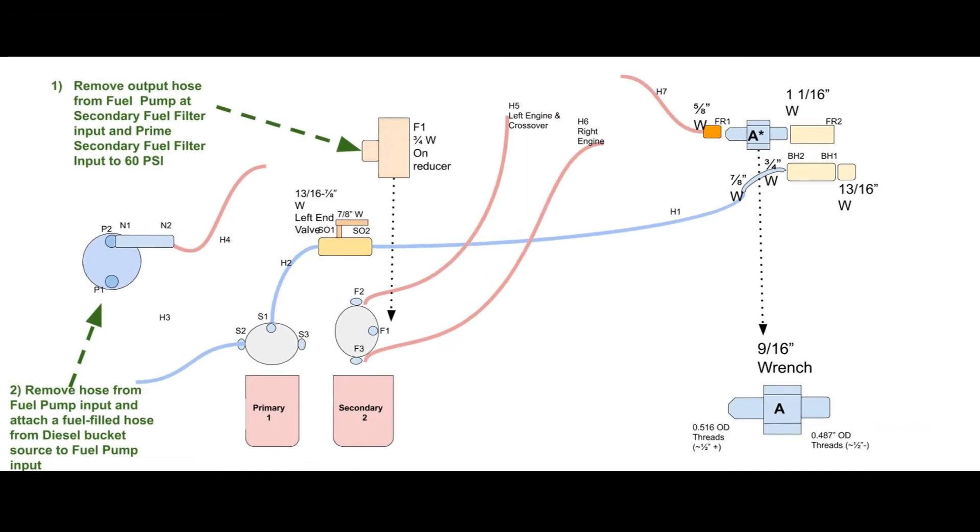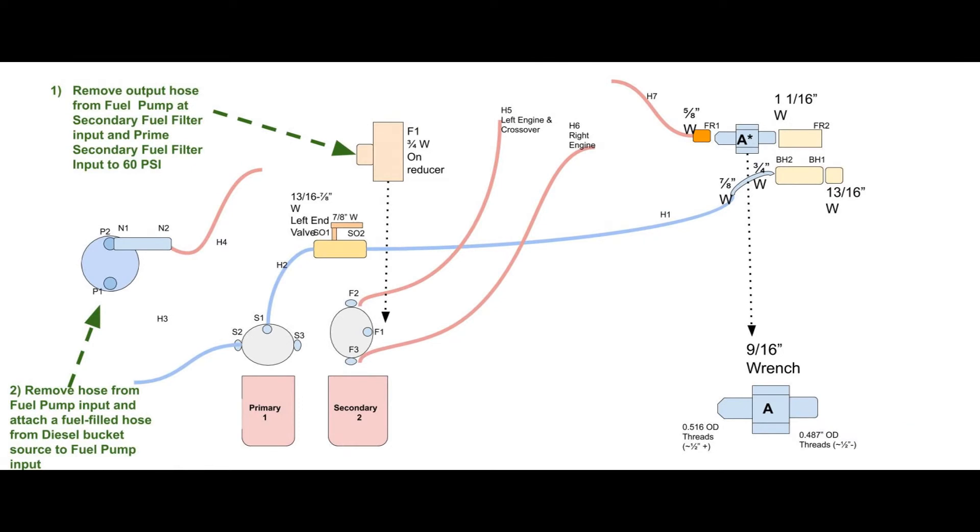The hose supplying fuel to the fuel pump input can be easily primed with a cup of diesel and a funnel with the help of gravity. The result was an engine that ran easily from the fuel container.